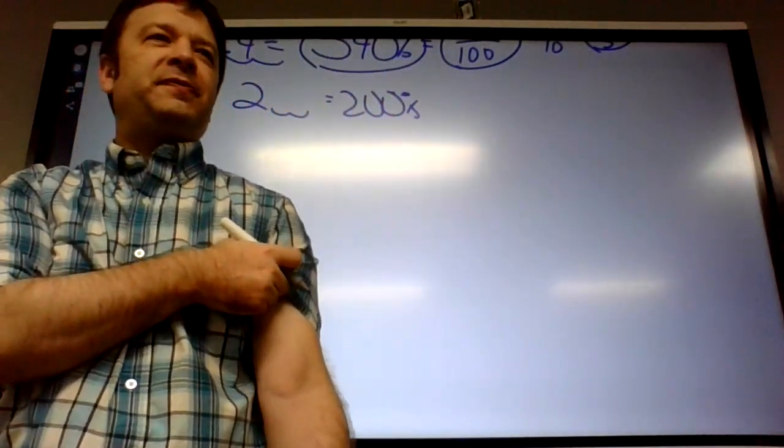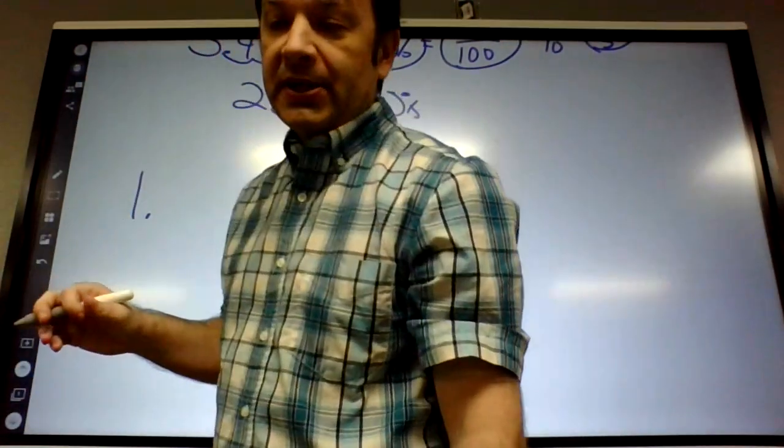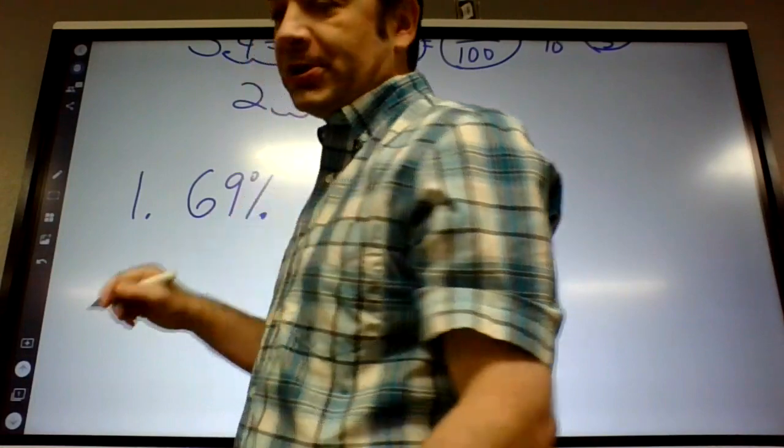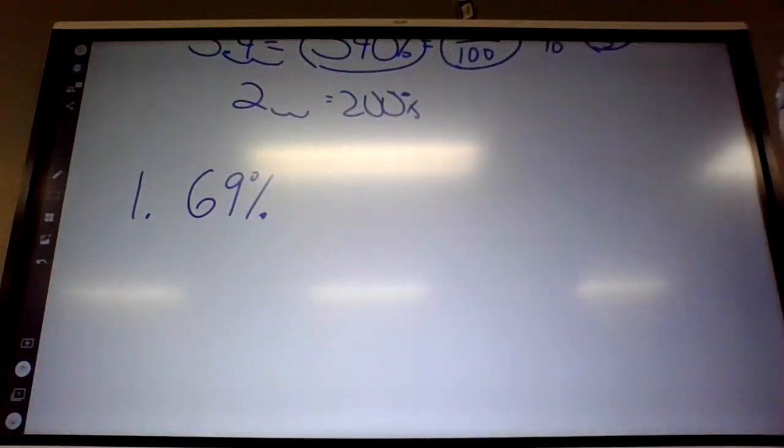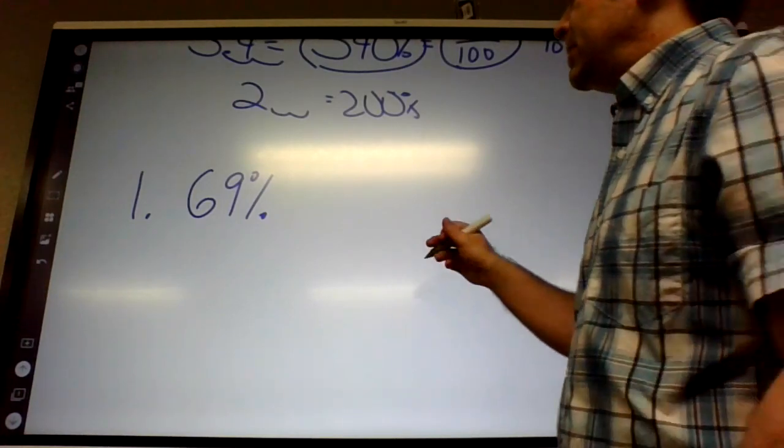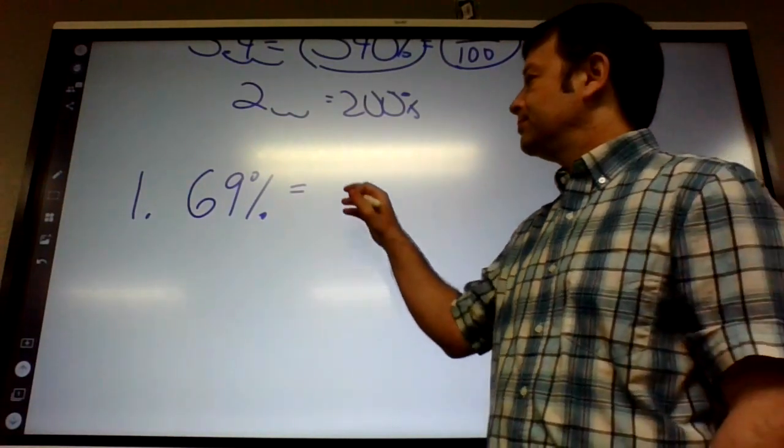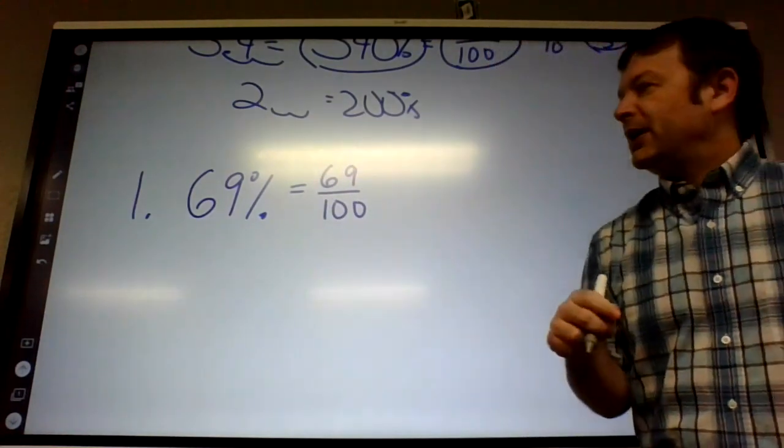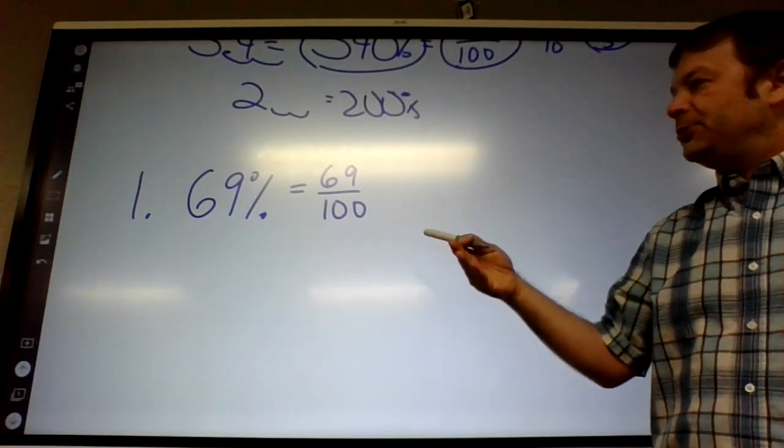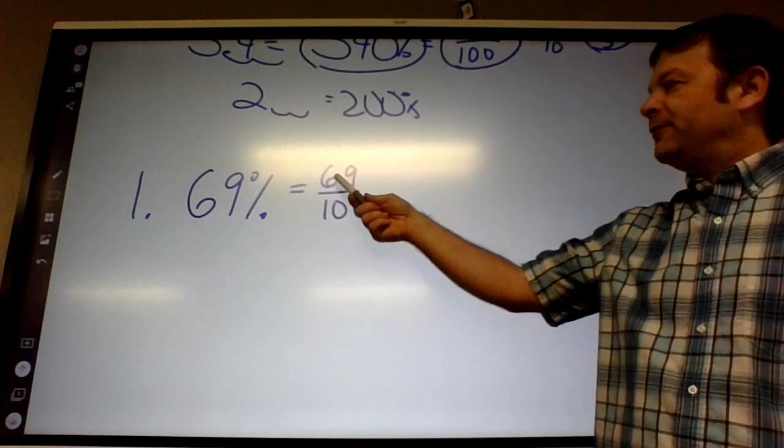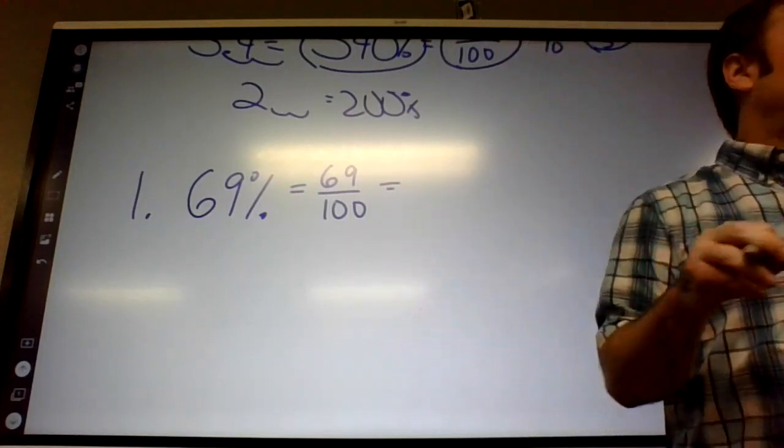Number one, let's jump in. It says 69%, and the directions say for each percent, fraction, or decimal, state the equivalent expression in the other two forms. So whatever form it's in, we're going to write it two other ways. Davin, what would 69% be as a fraction? So the fraction would be 69 over 100. Does that reduce? No. The only thing that goes into 100 is like 2 and 5. If it's not divisible by 2 and 5, it's not going to work, basically. What is it as a decimal, Davin? 0.69.